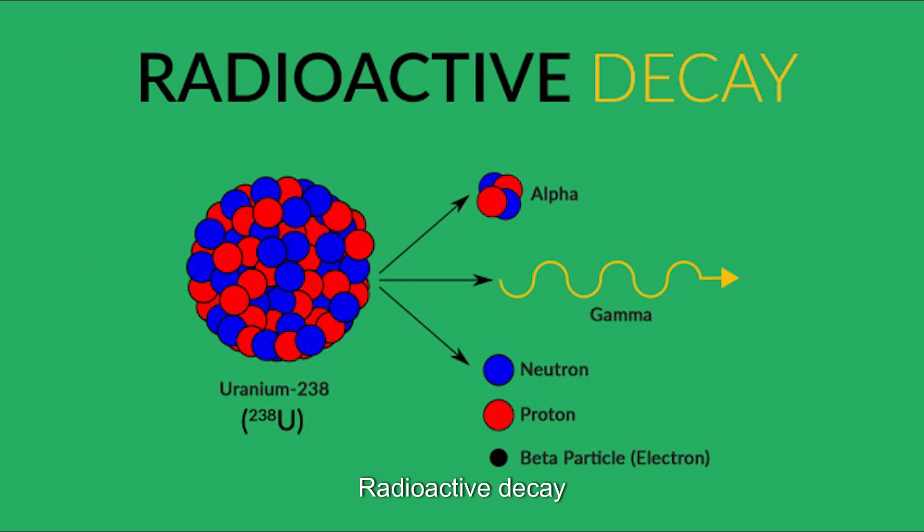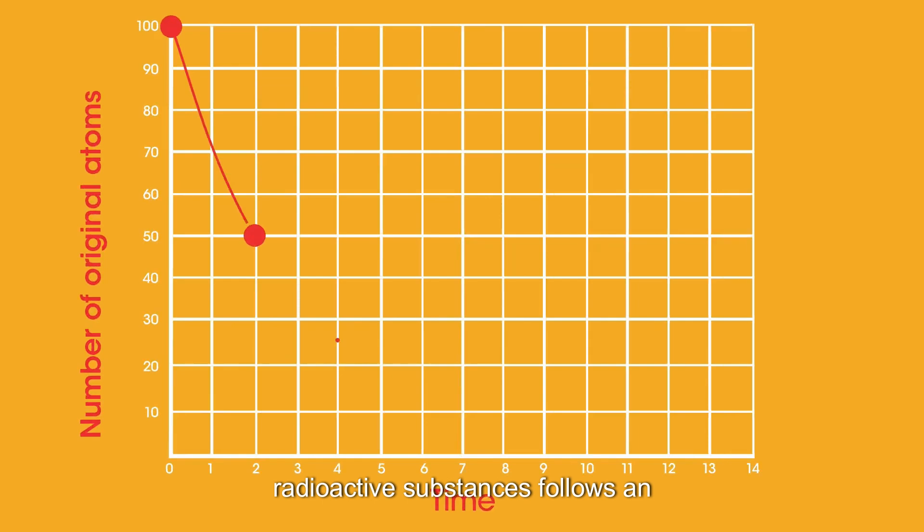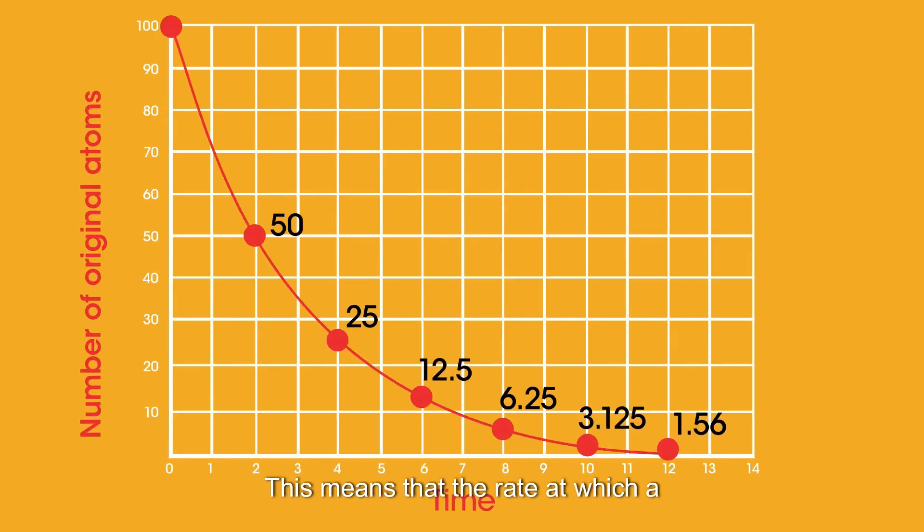Radioactive decay. In physics and chemistry, the decay of radioactive substances follows an exponential model. This means that the rate at which a substance decays is proportional to the amount still present.